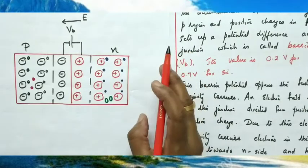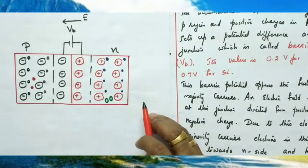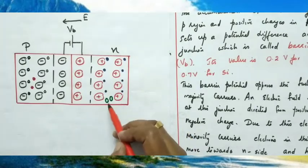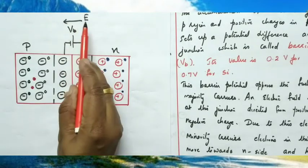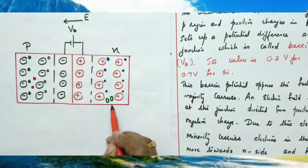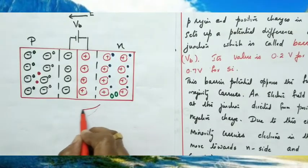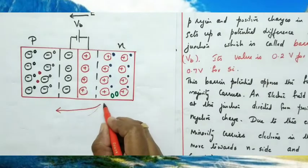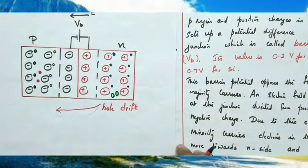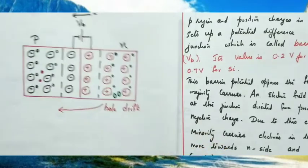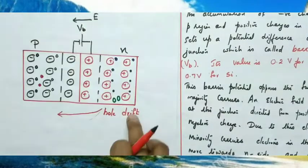When a charge is placed in an electric field E, it experiences a force F = QE. If it is a positive charge, the force is in the direction of the electric field. Since holes are positive charges, they experience a force in the same direction as the electric field. The electric field is directed from positive to negative — towards the left — so holes move from N to P. This process is called hole drift.